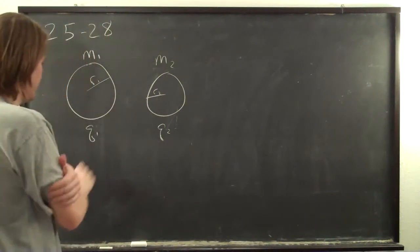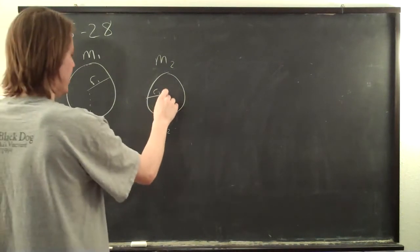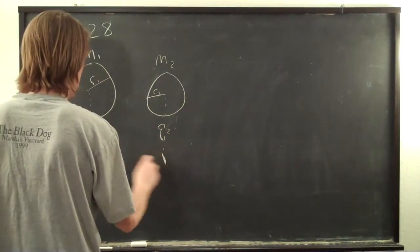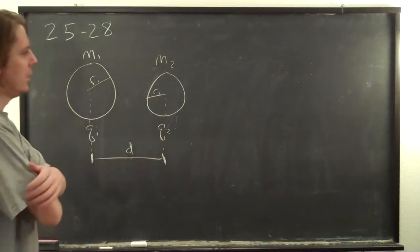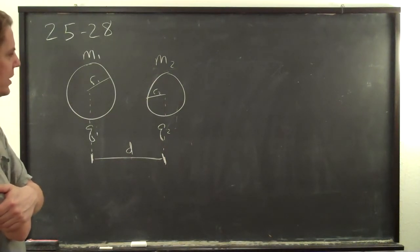And the question is, when they're separated, their centers are separated by a distance d. There's a lot of tricky little things to figure out, but the question is, how fast are they going when they hit?